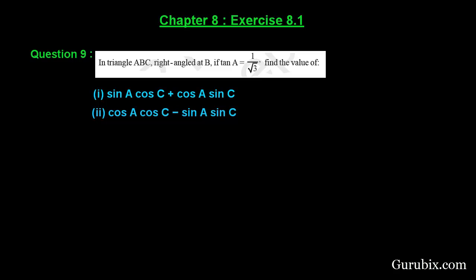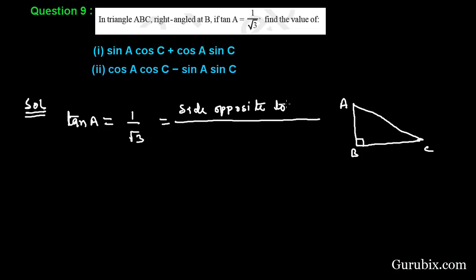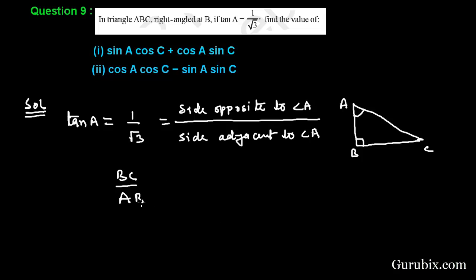Let us see how to solve this question. First, let us draw a right-angled triangle which is right angled at B. Here we have vertex A and here we have C. We are given that tan A is equal to 1 over square root of 3. We know that tan A equals the side opposite to angle A over the side adjacent to angle A. This means side opposite to angle A is BC, and side adjacent to angle A is AB. Therefore BC over AB is equal to 1 over square root of 3.